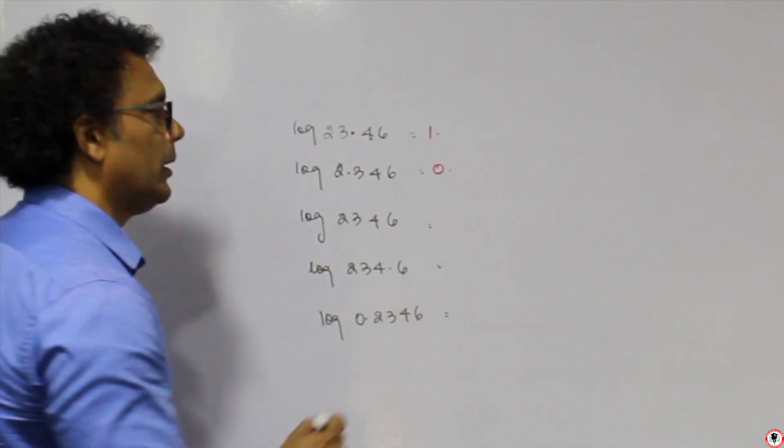For log of 7, the characteristic is 0 since there is one digit. We check 70 in column 0 — there is no mean difference since the last digit is 0. Looking up 70 in 0 in the log table gives 8451. So log of 7 = 0.8451.